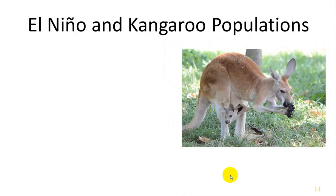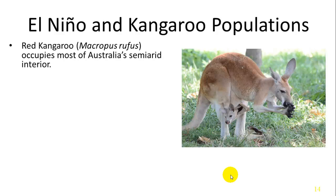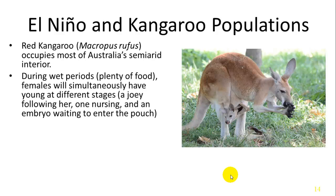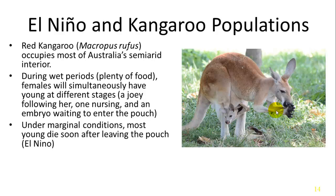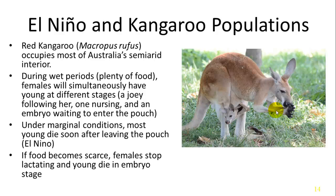An example of how El Niño affects populations is seen in kangaroos in Australia. The red kangaroo occupies most of Australia's semi-arid interior. During wet periods it has plenty of food, and females will have a baby in the pouch plus another embryo ready to replace it. Under marginal El Niño conditions with fewer wet periods, the young die soon after leaving the pouch. If food becomes too scarce, females stop lactating altogether and the young die in the embryonic stage, never reaching the joey stage.